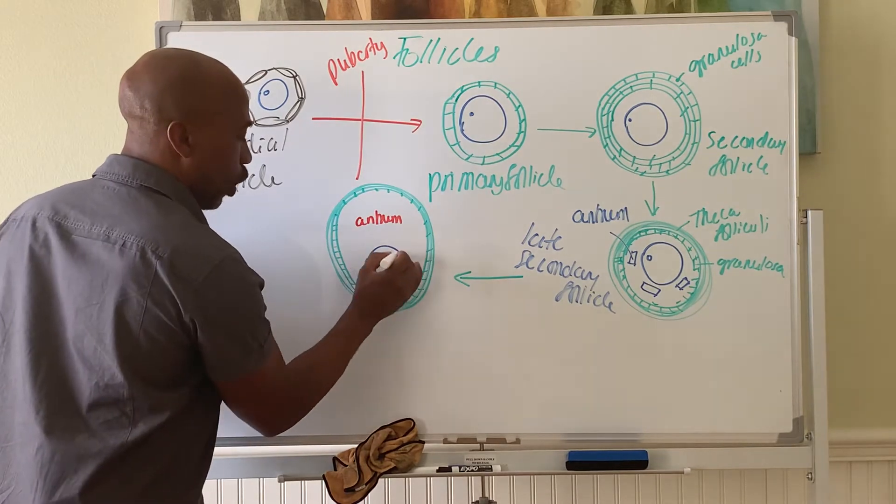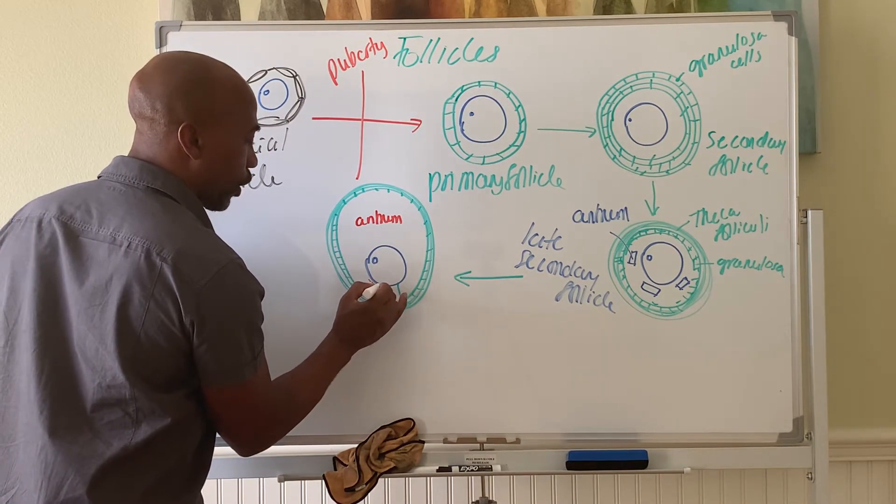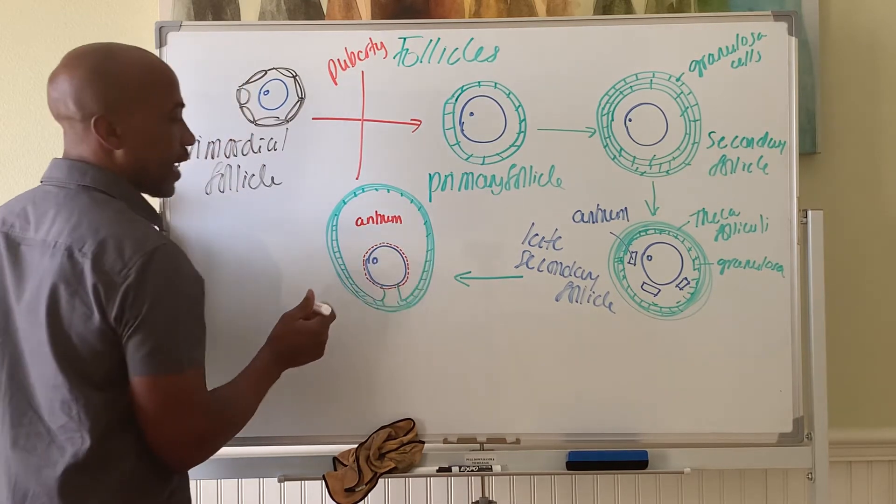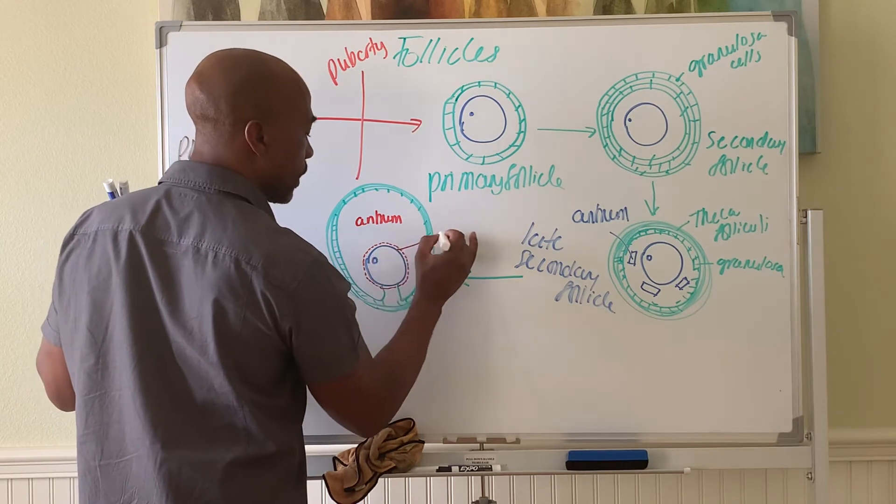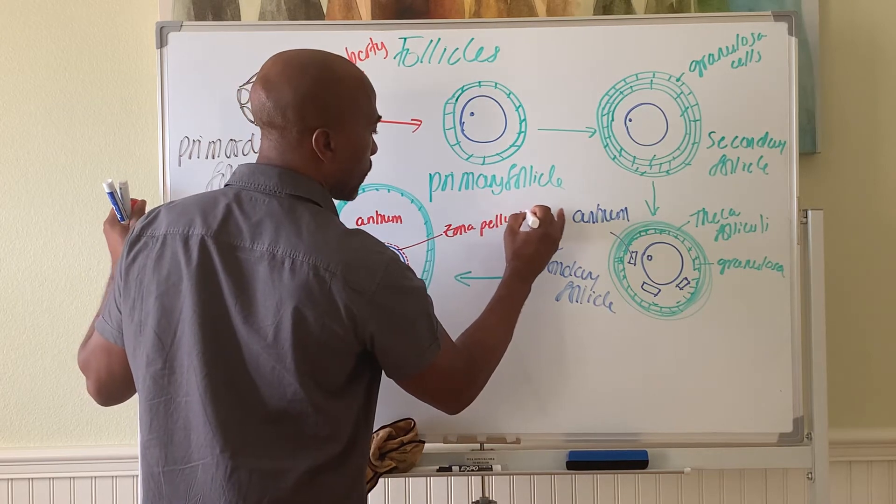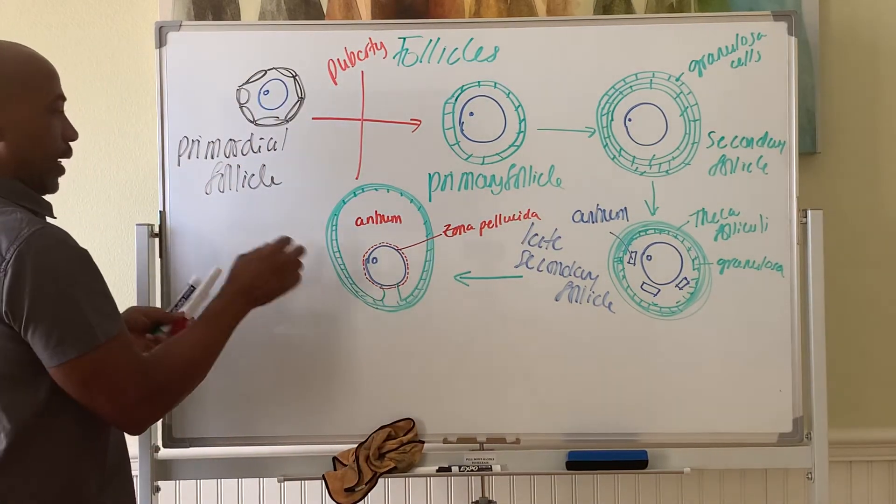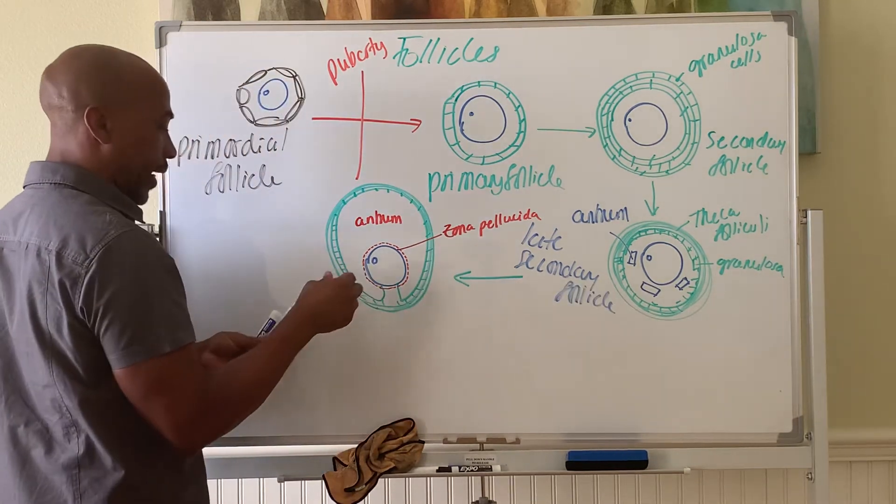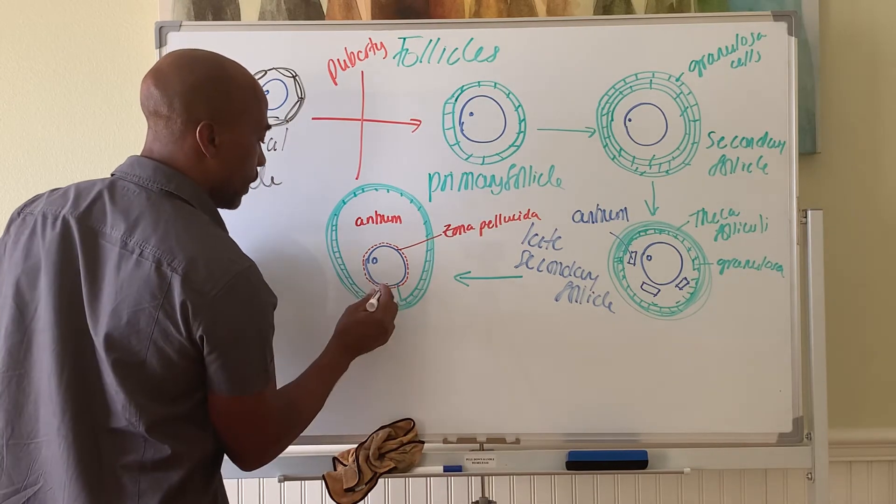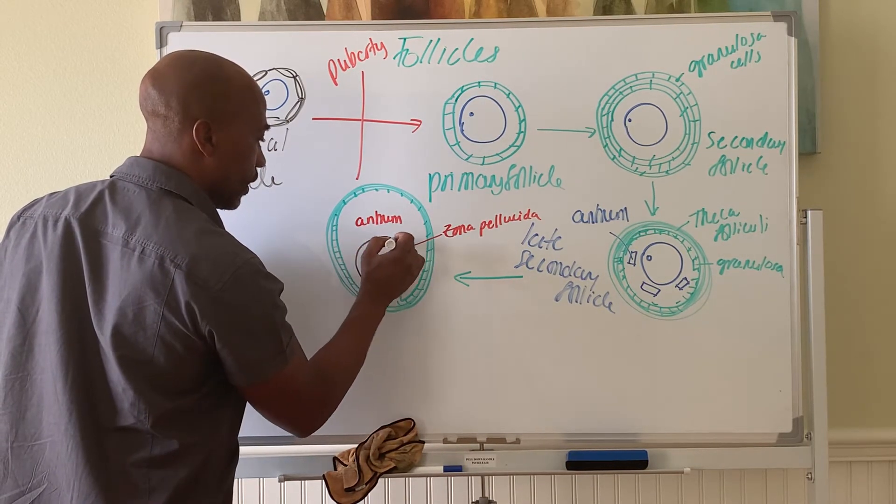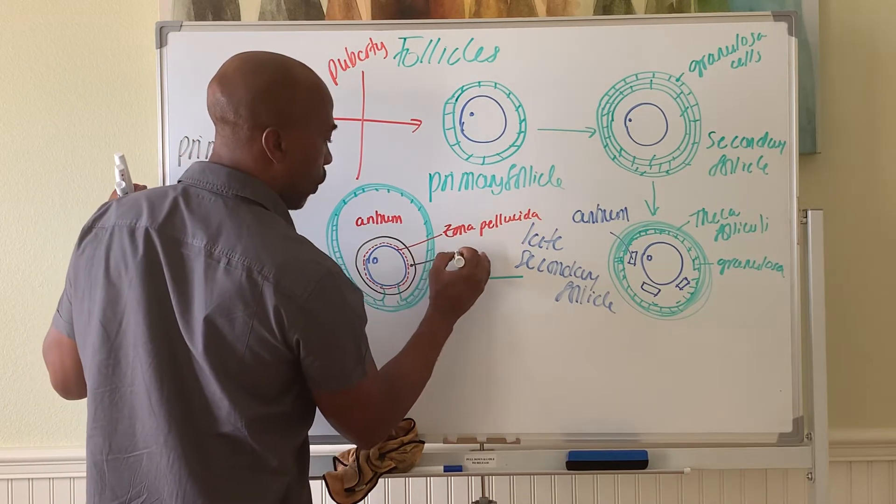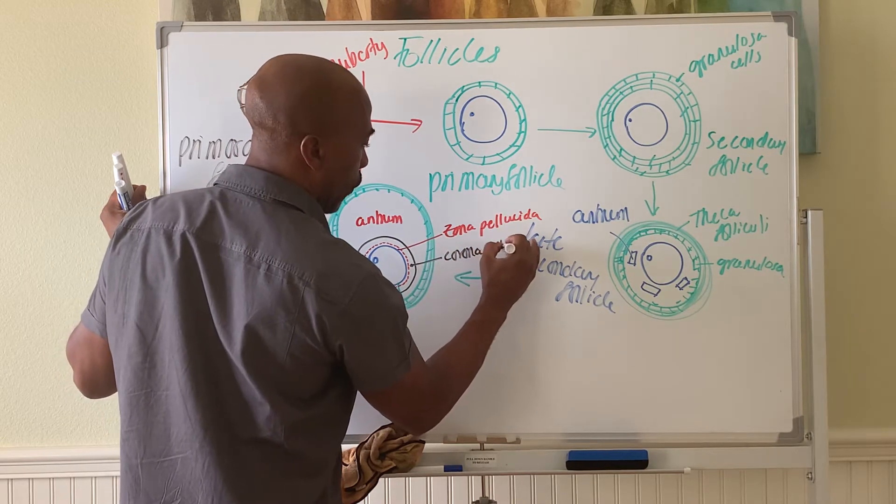Also, the oocyte secretes a little gel-like material to surround it. That membrane around the oocyte is called your zona pellucida. And then also, the granulosa cells coalesce to form a border around the zona pellucida. That is called your corona radiata.